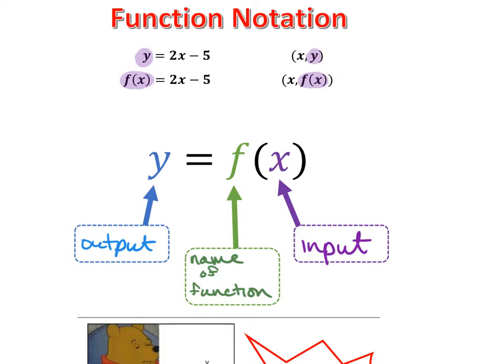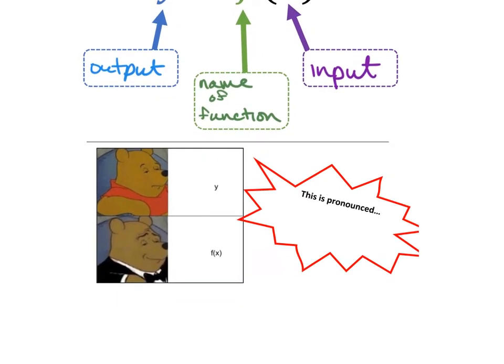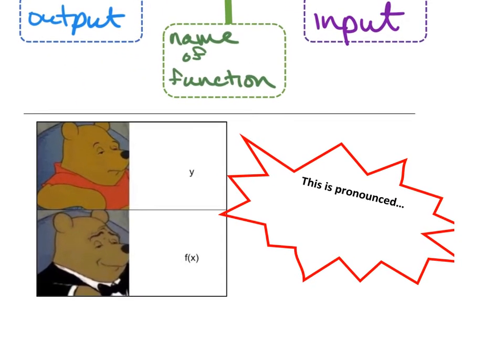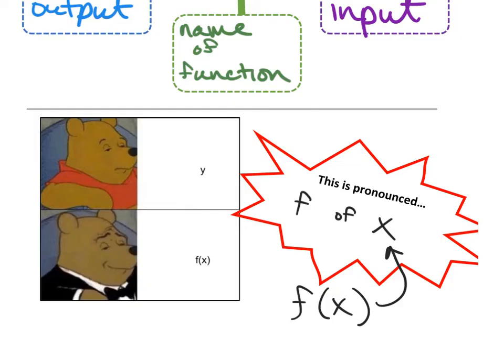This is really just a fancy way to talk about the outputs. f of x is your outputs. Pooh Bear helps us remember that f of x is really just a fancy version of y. Just so we remember: this is pronounced f of x — not f times x, not f parentheses x — this is called f of x.